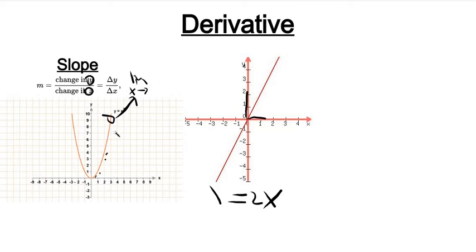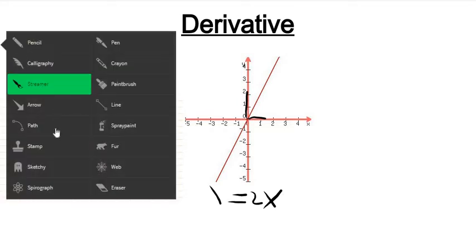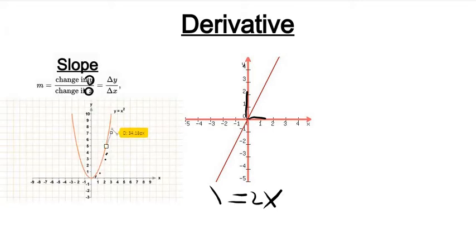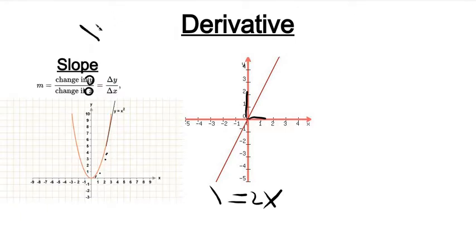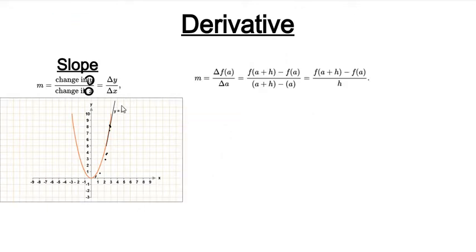When you zoom in far enough, it's going to look like a singular line where you could find the slope. There's also the idea of the tangent line — basically, you're drawing a line onto the curve. A tangent line is a line given to a curve that just touches one point. So at that point, x equals 3, the tangent line is equal to the curve. At x equals 3, we can evaluate the tangent line. I have a nice formula for calculating the derivative.